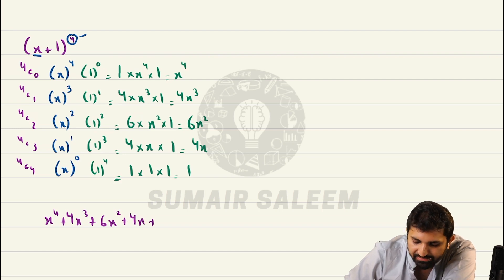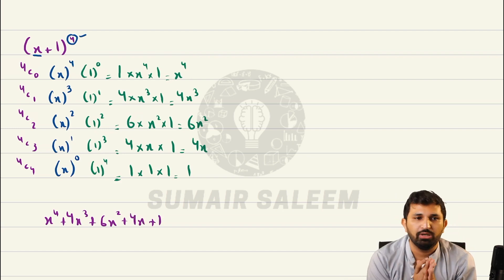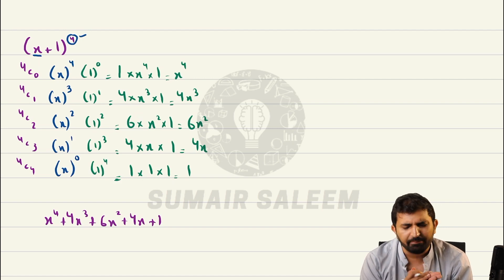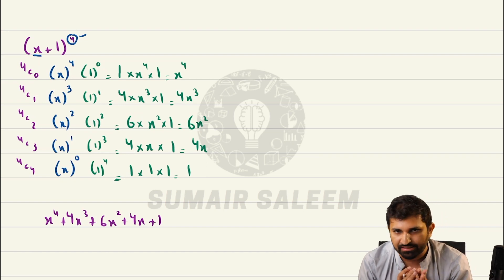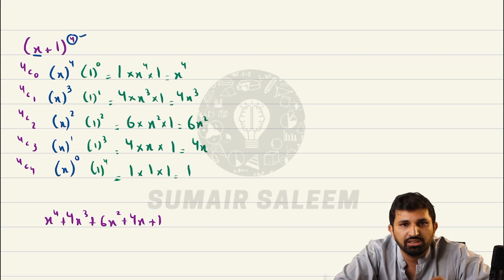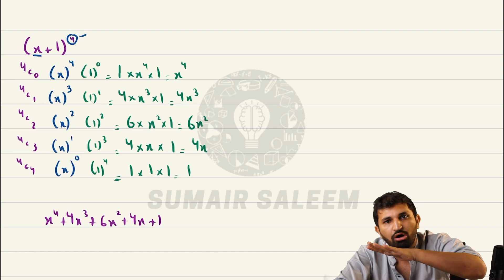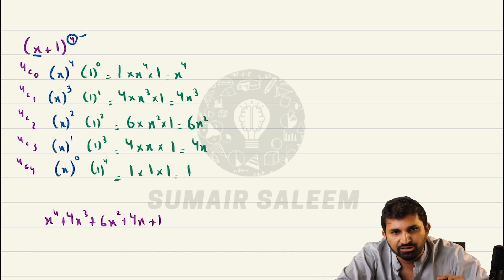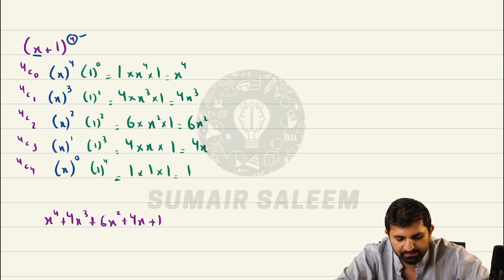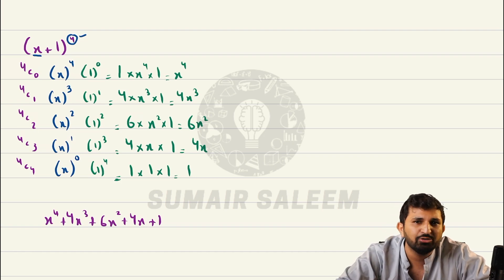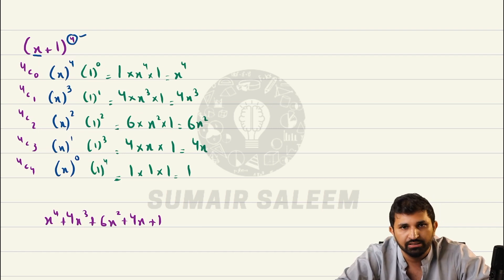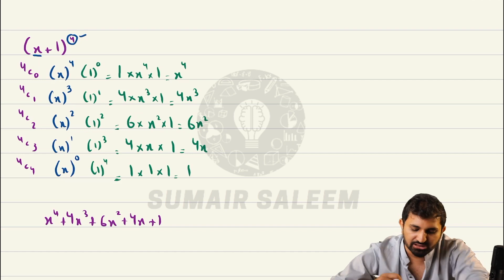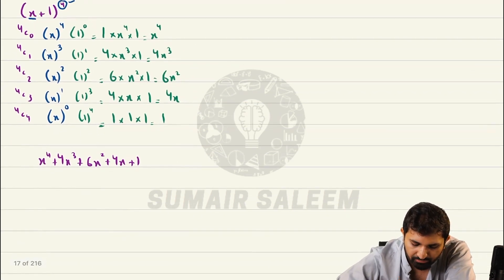The final answer, written in horizontal form, is x to the power 4 plus 4x cubed plus 6x squared plus 4x plus 1. So we have now learned full expansion. I will explain it like a game — trust me, there's no easier way to understand this. Let me do one more example.